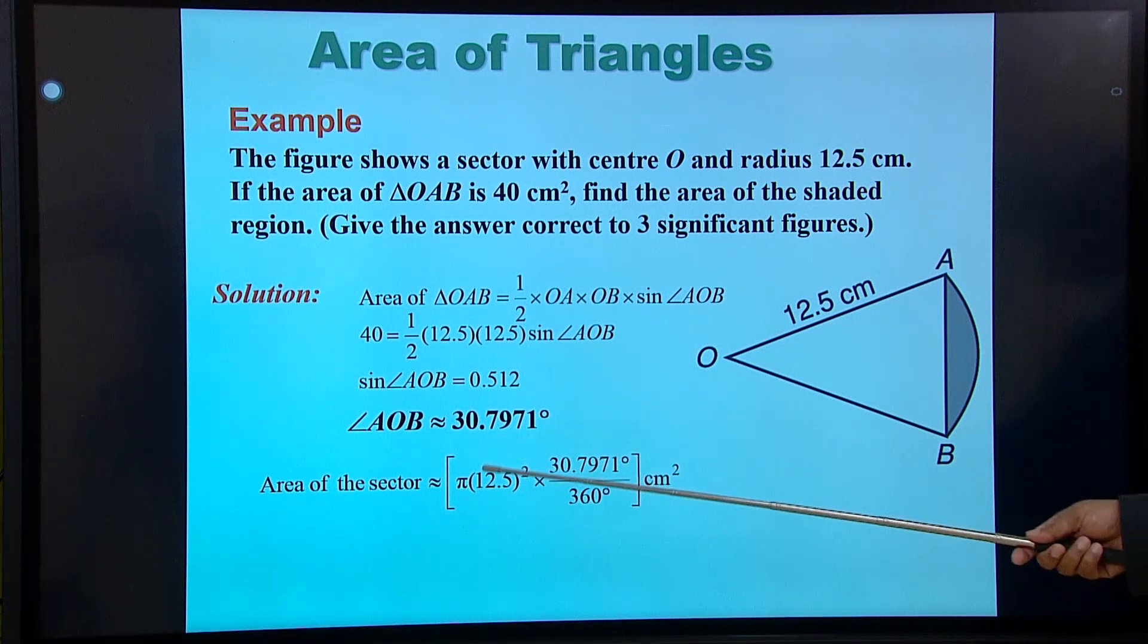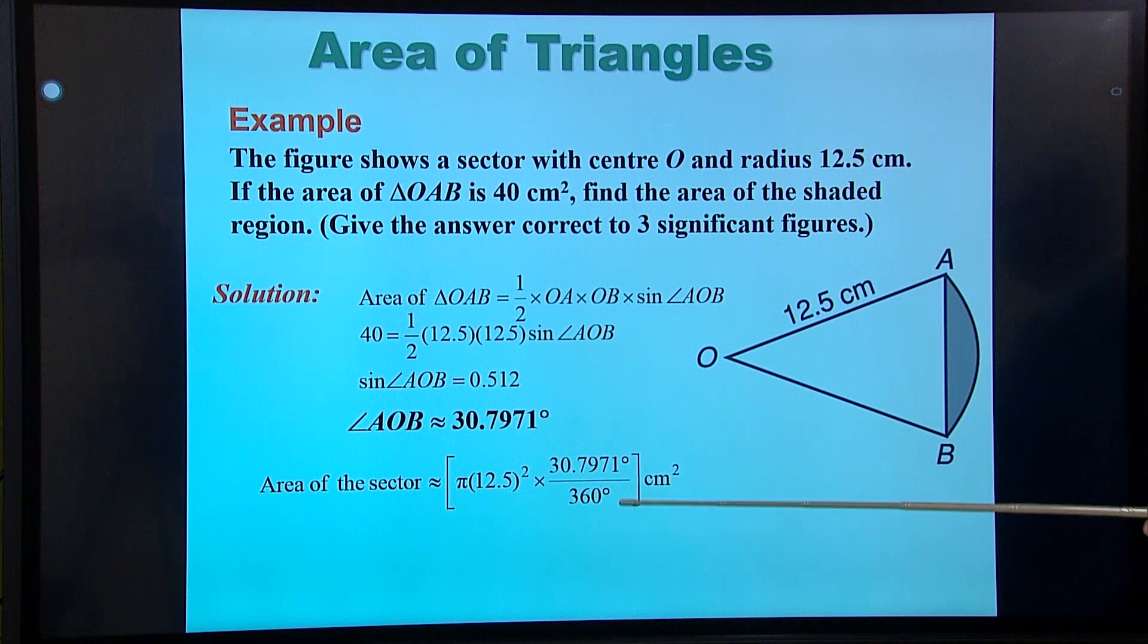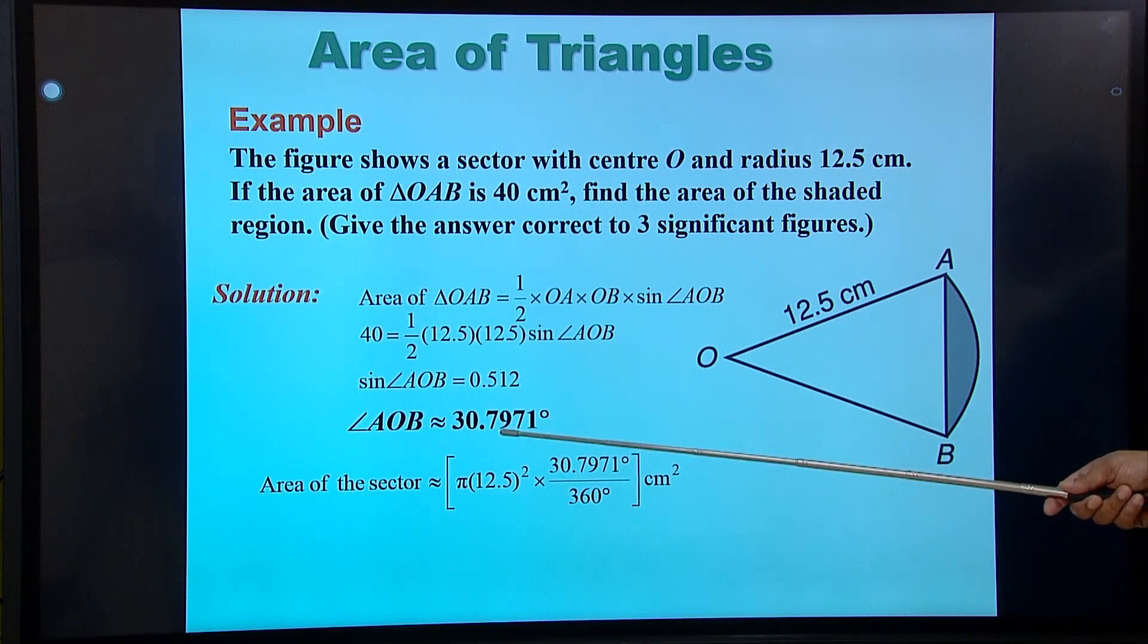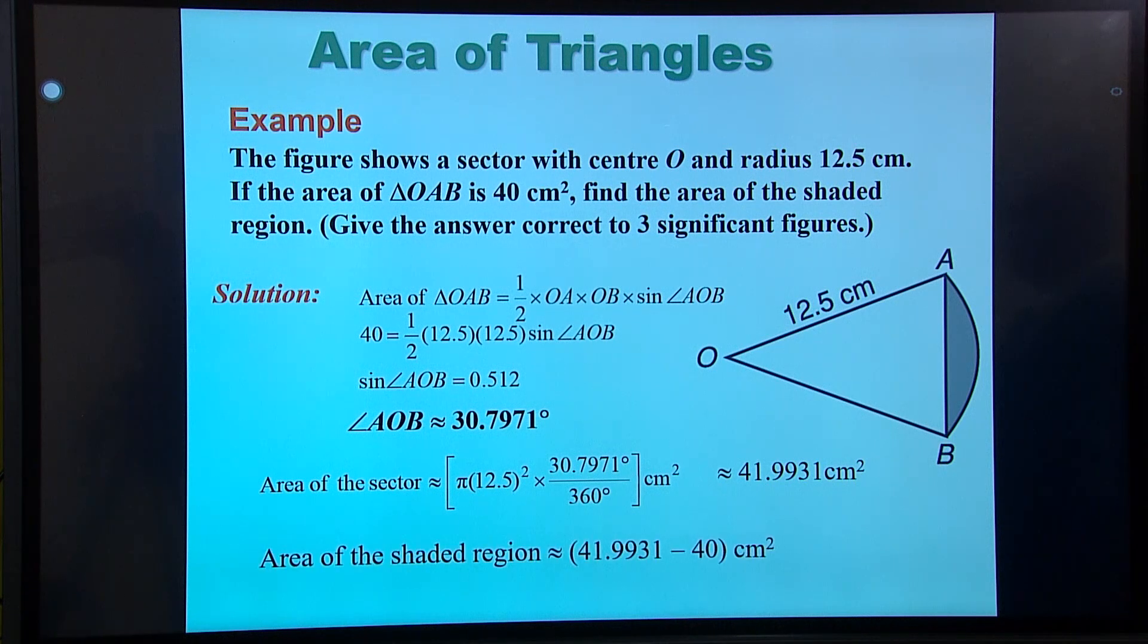And using that angle, I can then work out the area for the sector, which is the fraction of the entire area of a circle, which is pi R squared. So that is the area of the sector, which means if I subtract the area of the triangle for T, I will get the answer.